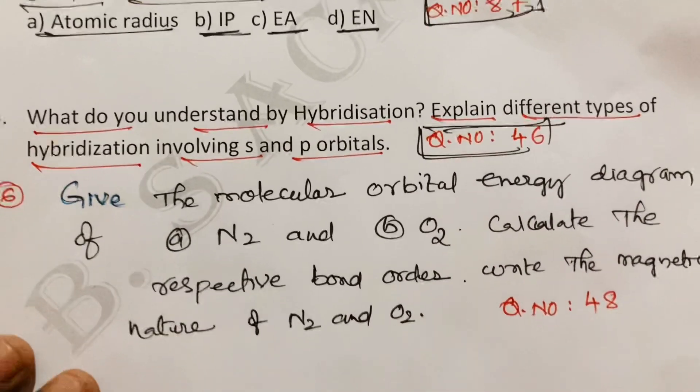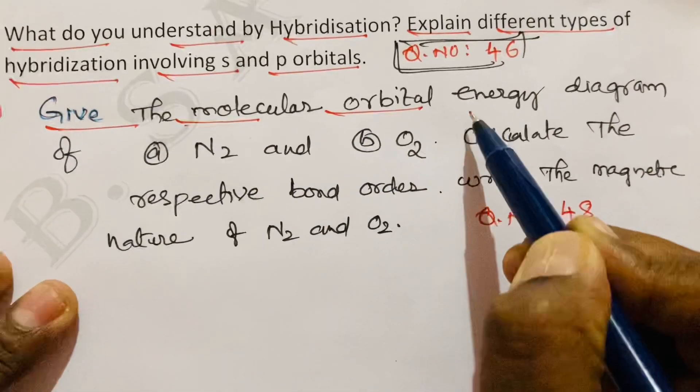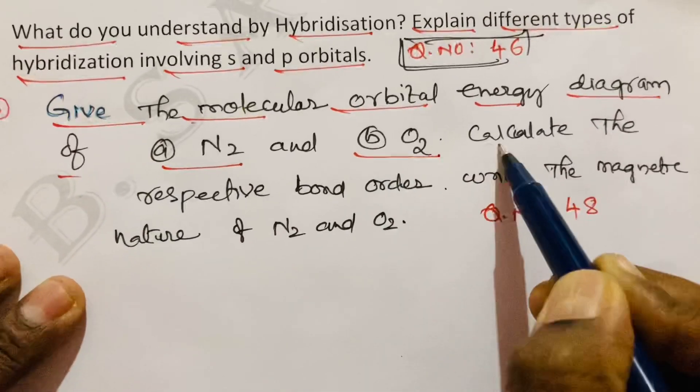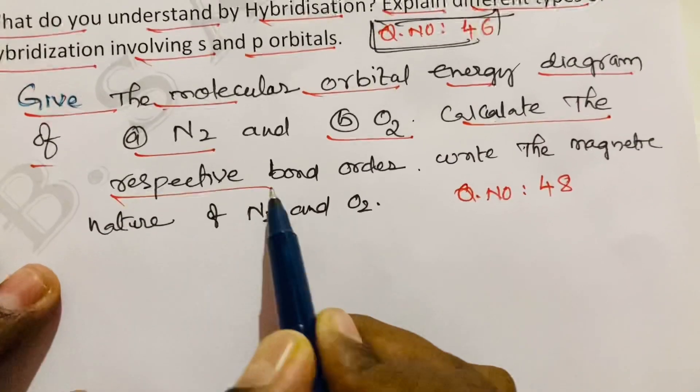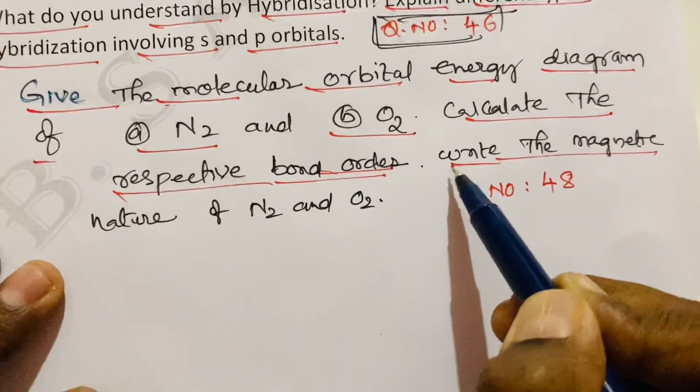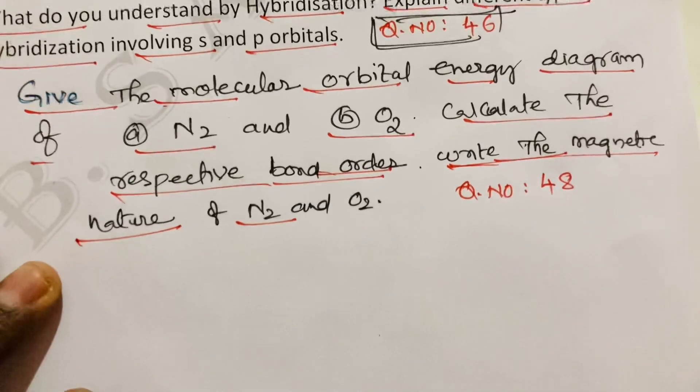This is also very most important student. Next question from chemical bonding. Give the molecular orbital energy diagram of N2 and O2. Calculate the respective bond order. Write the magnetic nature of N2 and O2.